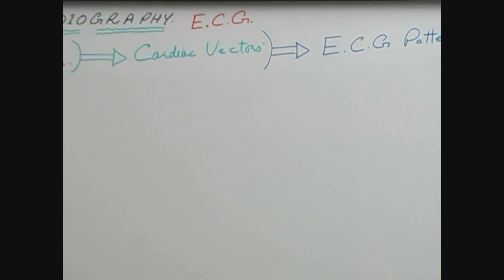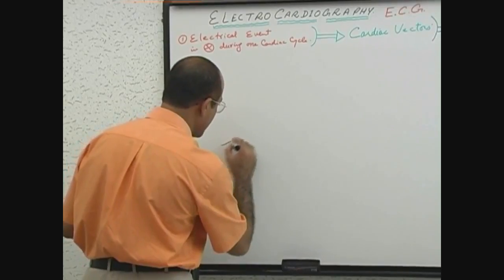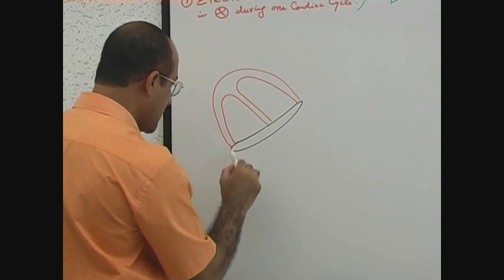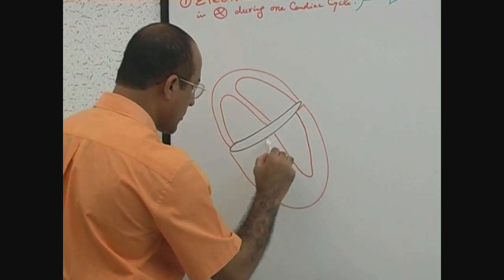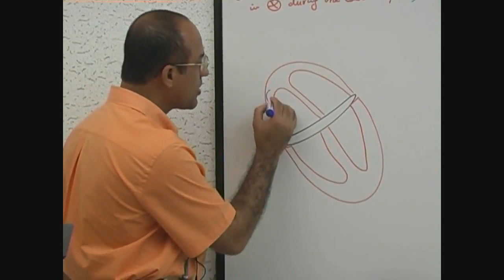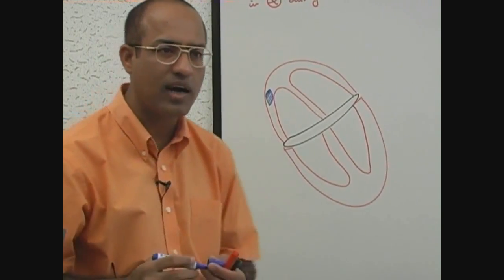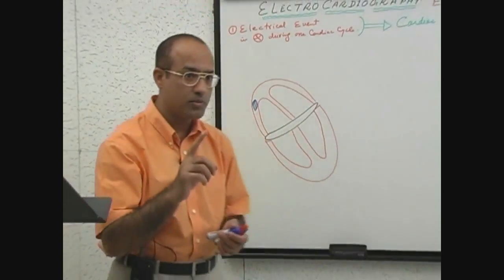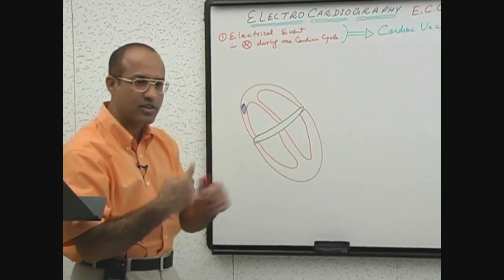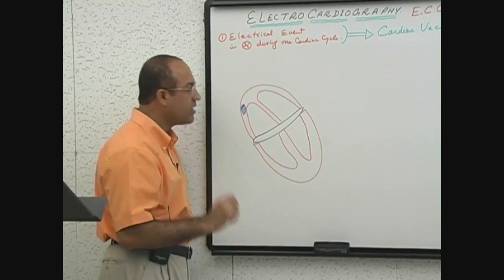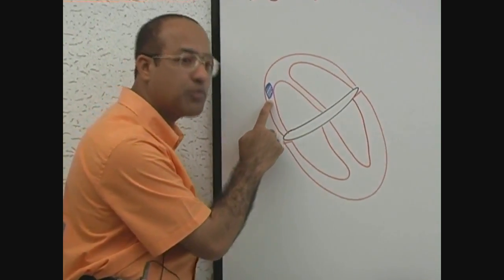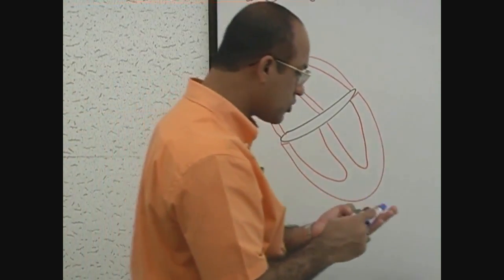Let's suppose here is your heart. I'll draw a big heart — these are your atrial chambers and here are your ventricular chambers. Now, you know electrical activity in the heart starts with the depolarization of the SA node. In a normal heart, we are talking about the electrical activity of the whole heart. At the beginning of the cardiac cycle, the SA node fires and generates a wave of depolarization.